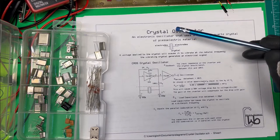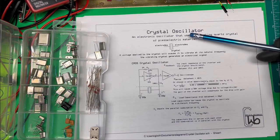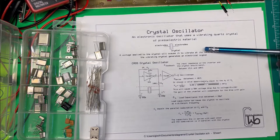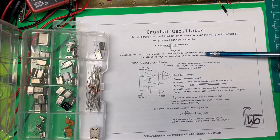Let's take a look at a crystal oscillator. It's an electronic oscillator that uses a vibrating quartz crystal of piezoelectric material. When you apply a voltage to the crystal, it causes it to vibrate at its natural frequency, and the vibrating crystal generates an electric signal.